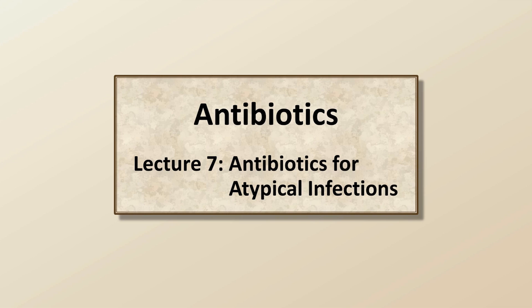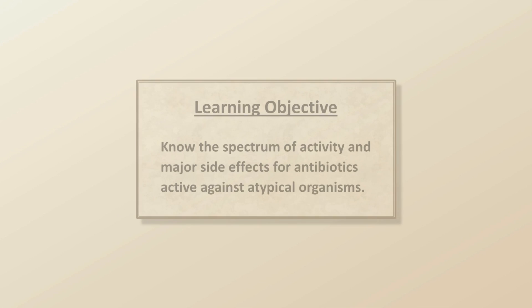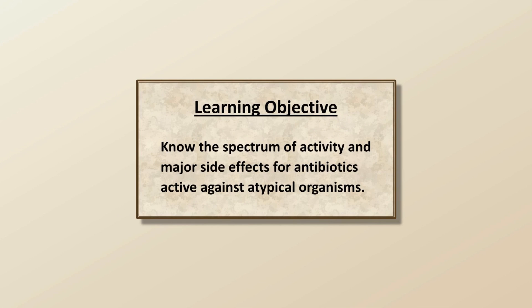This is Lecture 7 in this course on Antibiotics, and the topic is Antibiotics for Atypical Infections. The learning objective is to know the spectrum of activity and major side effects for antibiotics active against atypical organisms.